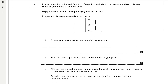Question 4. A large proportion of the world's output of organic chemicals is used to make addition polymers, which have a variety of uses. Polypropene is used to make packaging, textiles, and rope. A repeat unit for polypropene is shown below. Explain why polypropene is a saturated hydrocarbon. Polypropene is saturated because it only contains carbon-carbon single bonds — it does not contain any carbon-carbon double bonds.